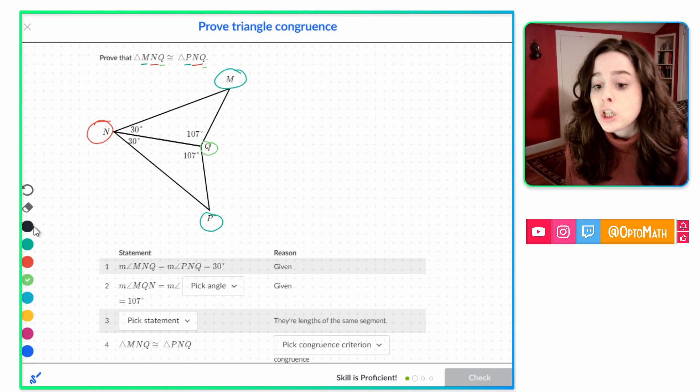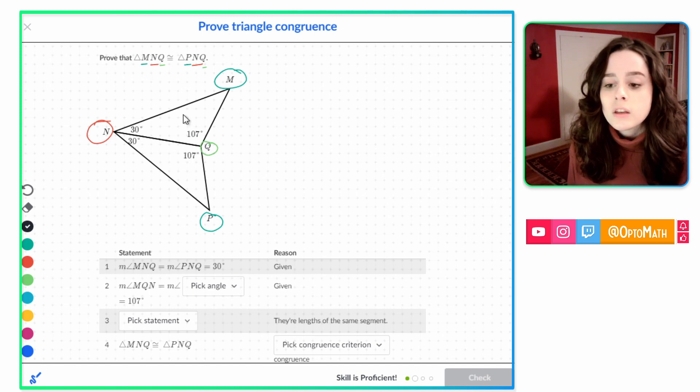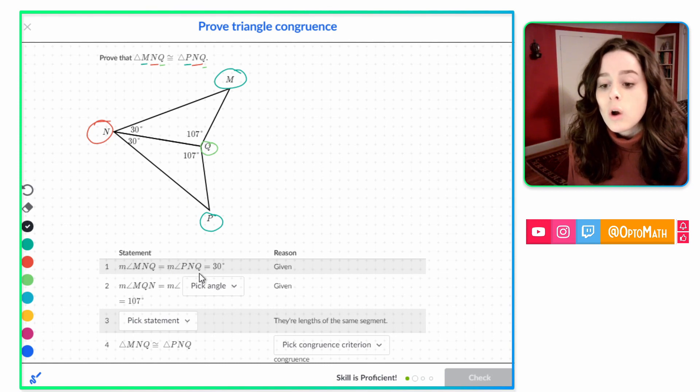So since we have those letters right on top of each other, that's a big clue that we're going to have a reflection for our rigid transformation that maps one to the other. So just a clue in there.